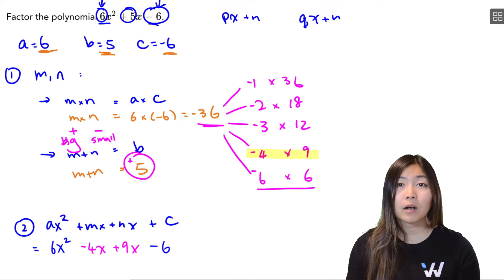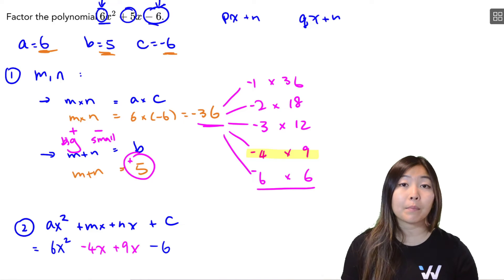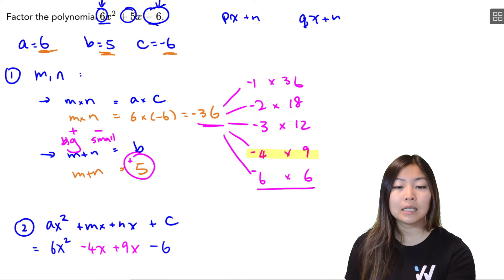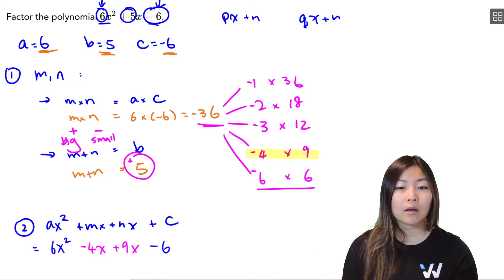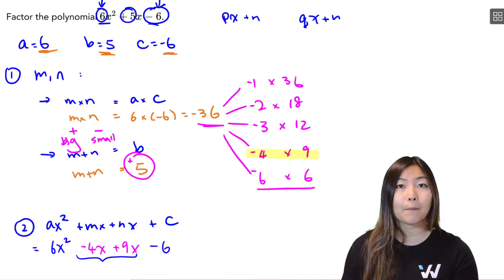So out of all five possibilities, negative 4 plus positive 9, that's the only way to get positive 5. So we are going to decompose 6x squared plus 5x minus 6 into 6x squared minus 4x plus 9x, which is still 5x, minus 6.